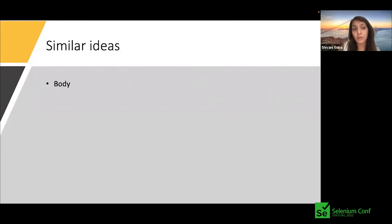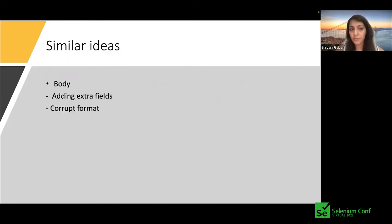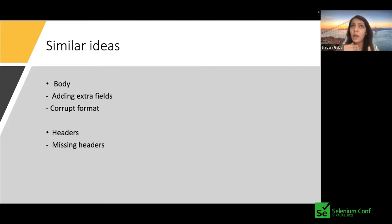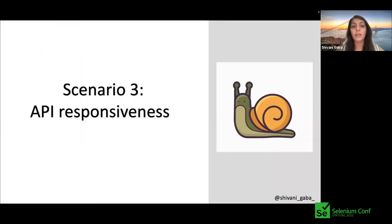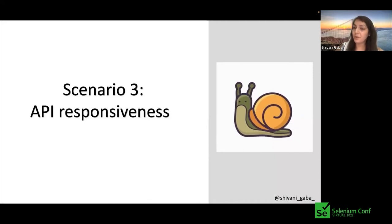Similar ideas: in the body file, try not just removing fields but adding extra fields, changing the format from JSON to XML, or manipulating headers — what if required headers are missing, or invalid headers are passed? All these cases can be easily tested with the help of mocks. Scenario three: API responsiveness. In 2022 we're impatient — nobody wants to wait five minutes for a weather report.